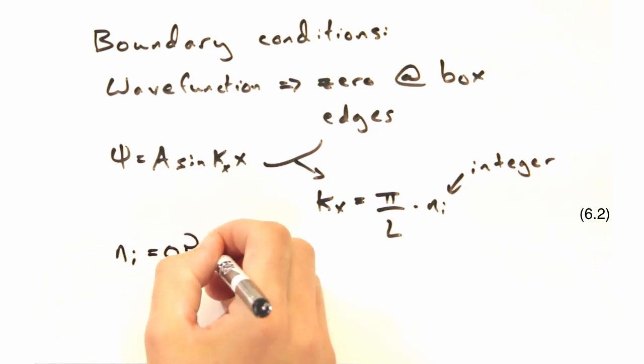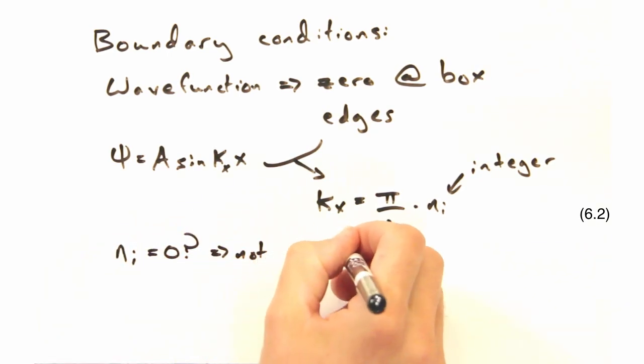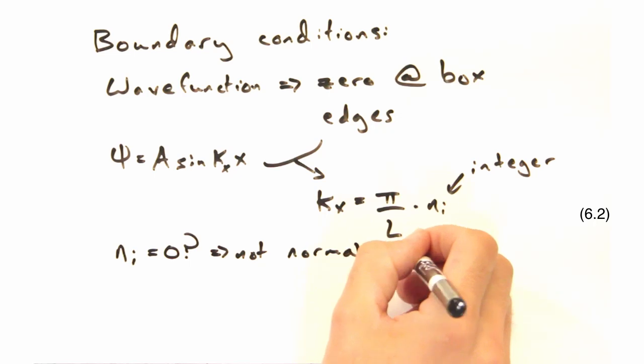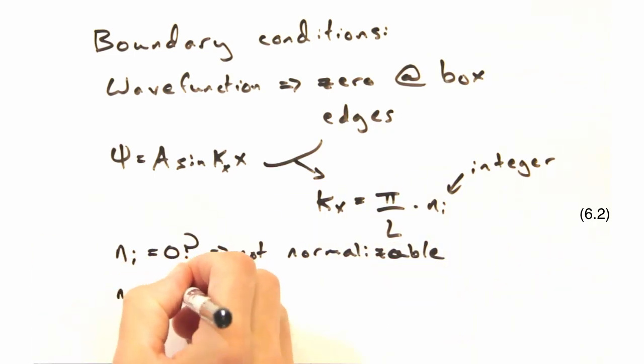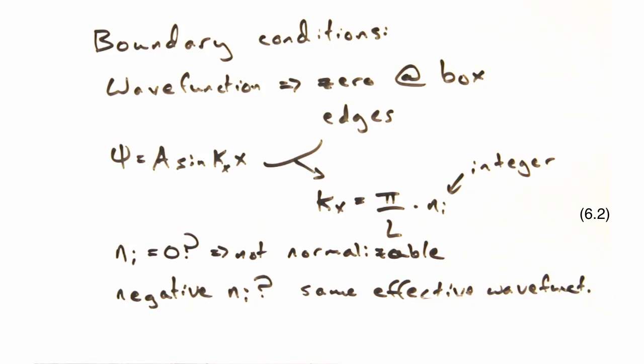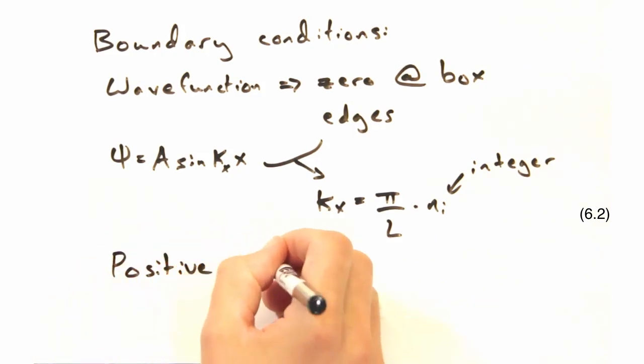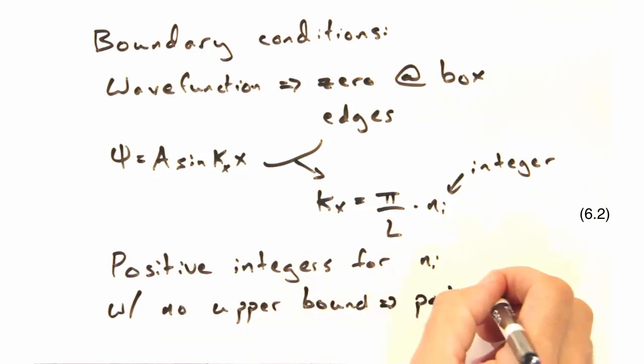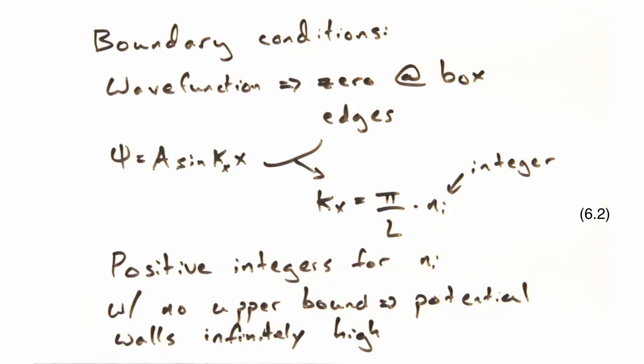Can we use zero? Well, we could, but then that makes psi equal to zero. Pretty hard to normalize that. And what about negative values for ni? It would basically just give us the same wave function, so there's no sense in using that either. Indeed, and thus we only have positive energies for n sub i without an upper limit because our potential is infinitely tall.